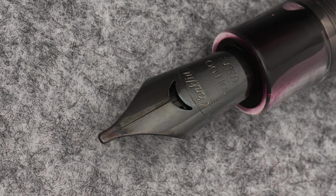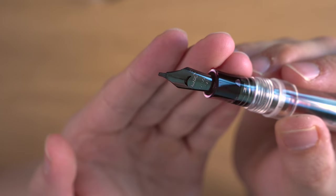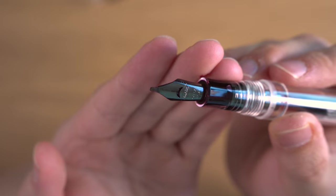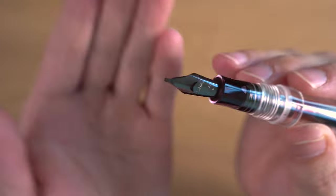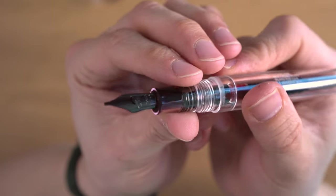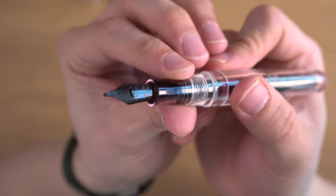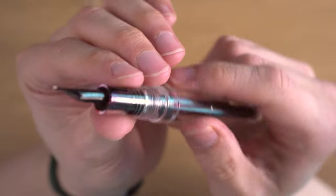This is a stub nib. The standard nibs that you can get are the OmniFlex nib, which is semi-flexible, and then they have broad, medium, fine, extra fine, and then this stub. These are Yovo number six nibs, so they're pretty easy to change out, and they write really nicely.